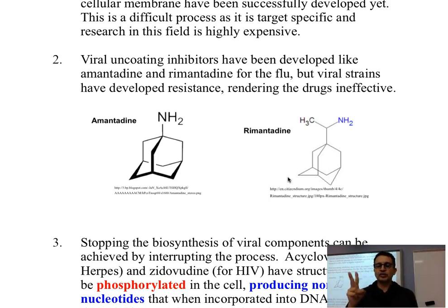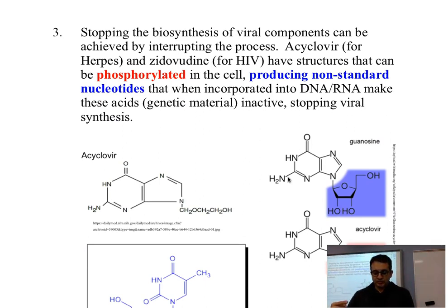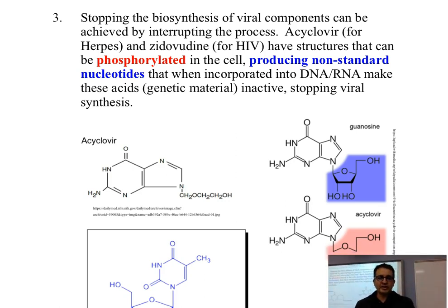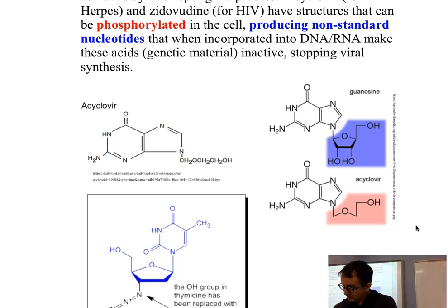We are left with stage three and stage four. Stage three is when the genetic material of the virus uses the host cell's machinery to produce new copies. Two drugs have been relatively successful here. The first is acyclovir, used for herpes, and the second is zidovudine, used for HIV — human immunodeficiency virus. Both of these drugs are present in your data booklet on table 34, page 39.